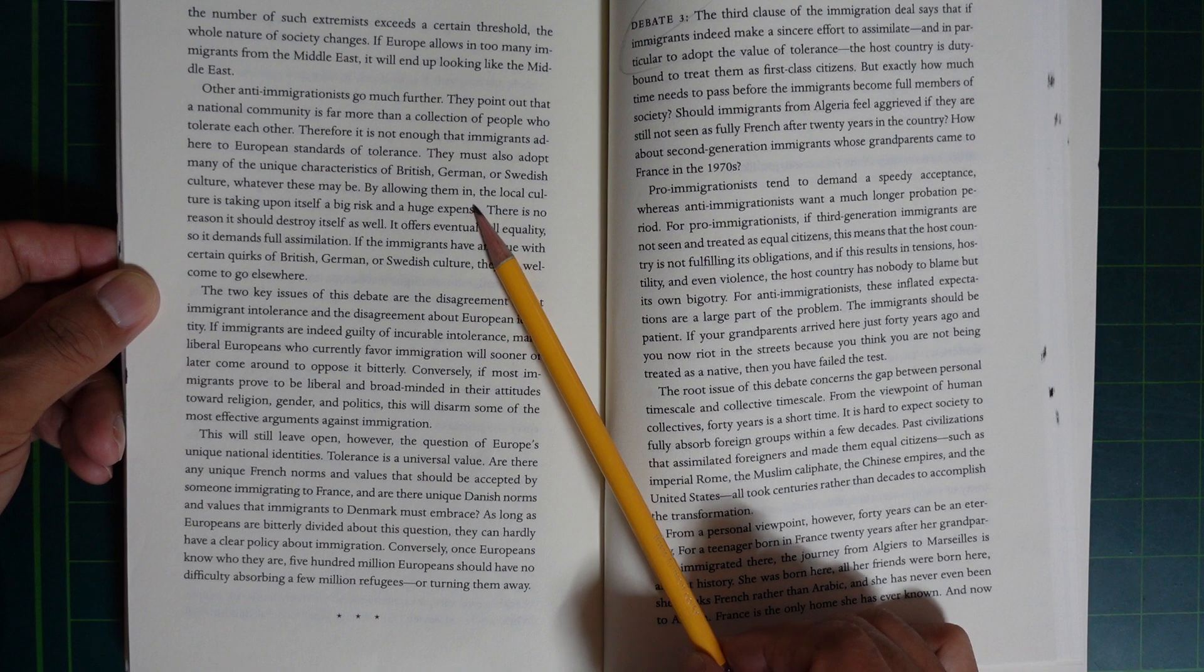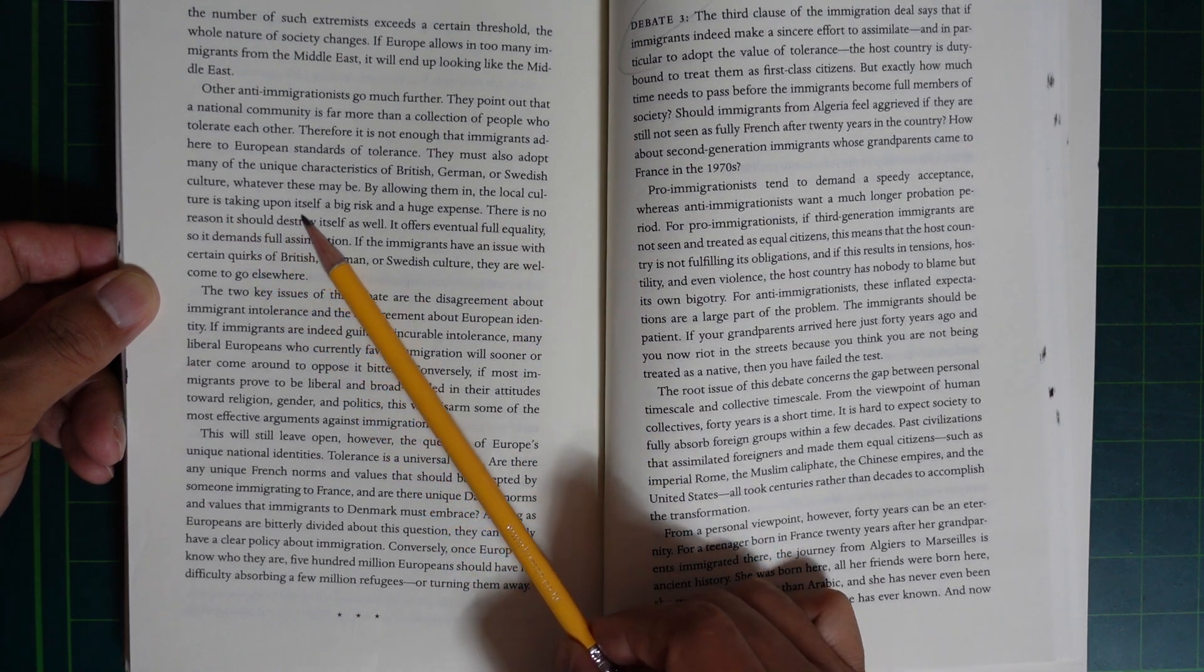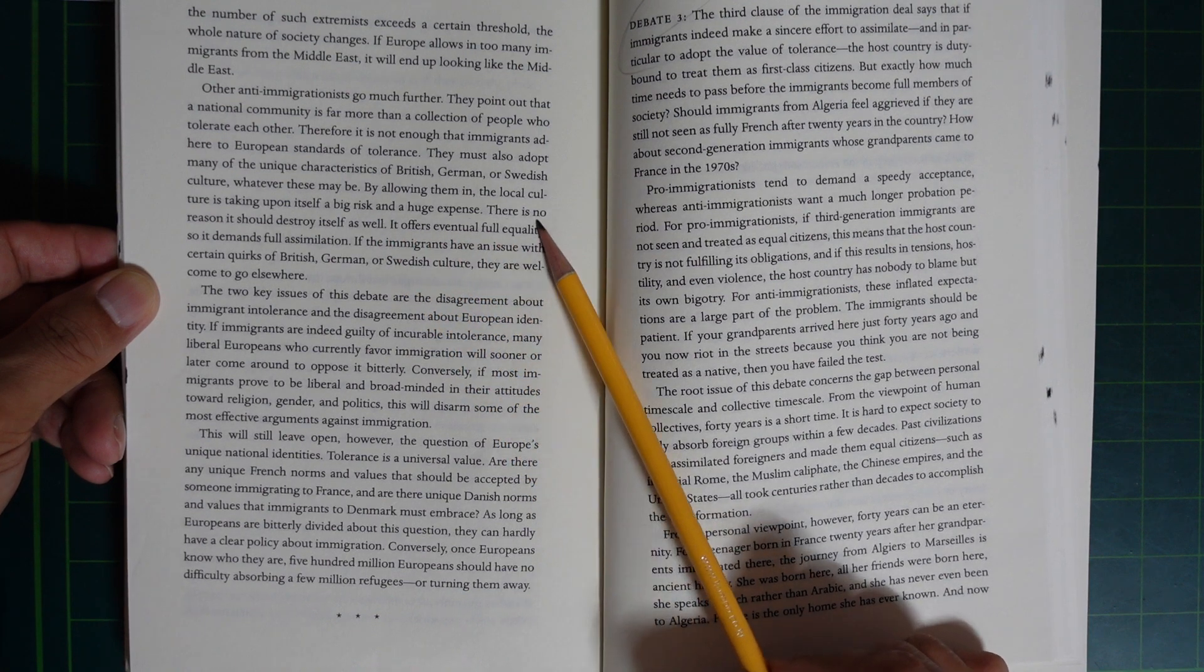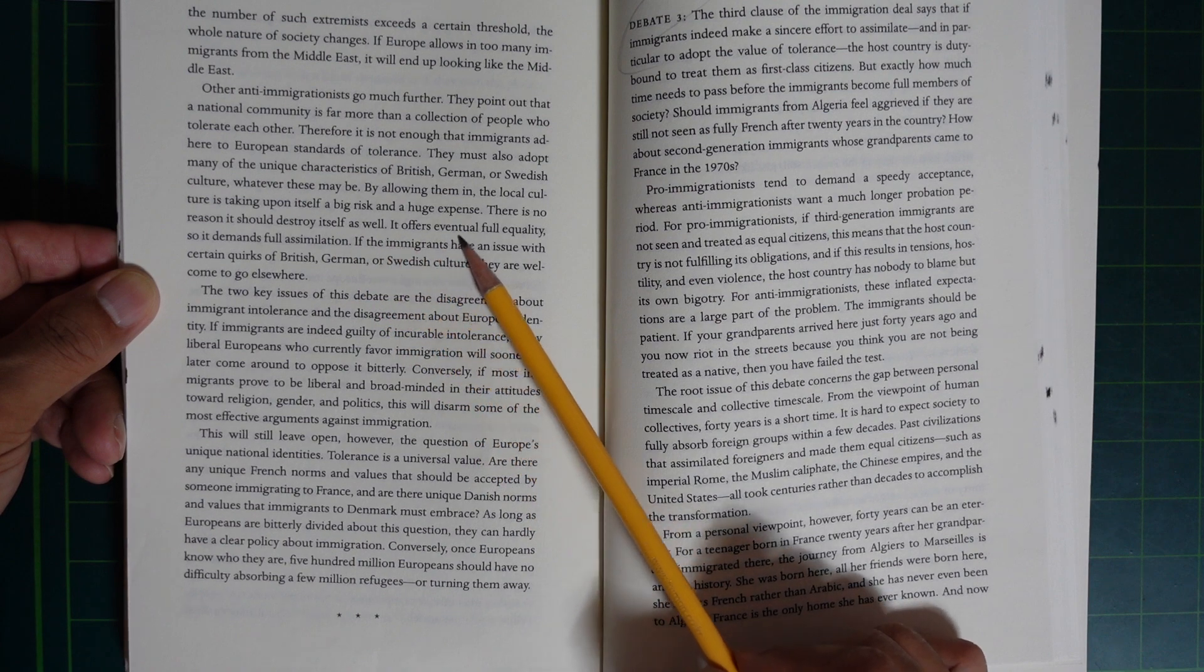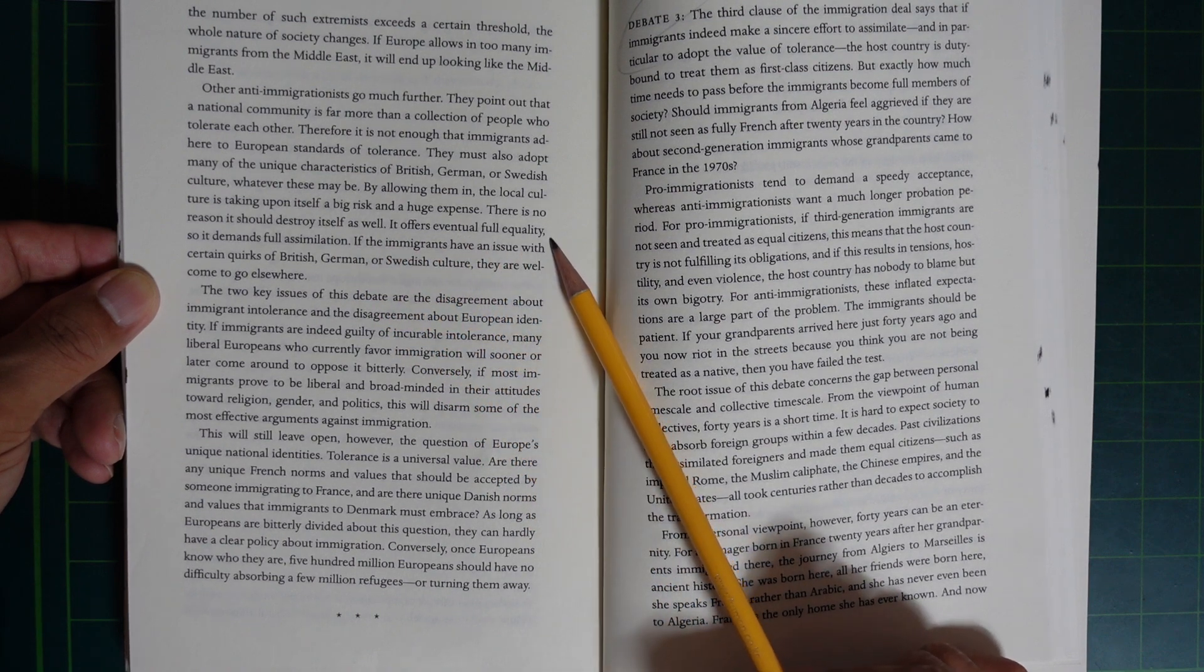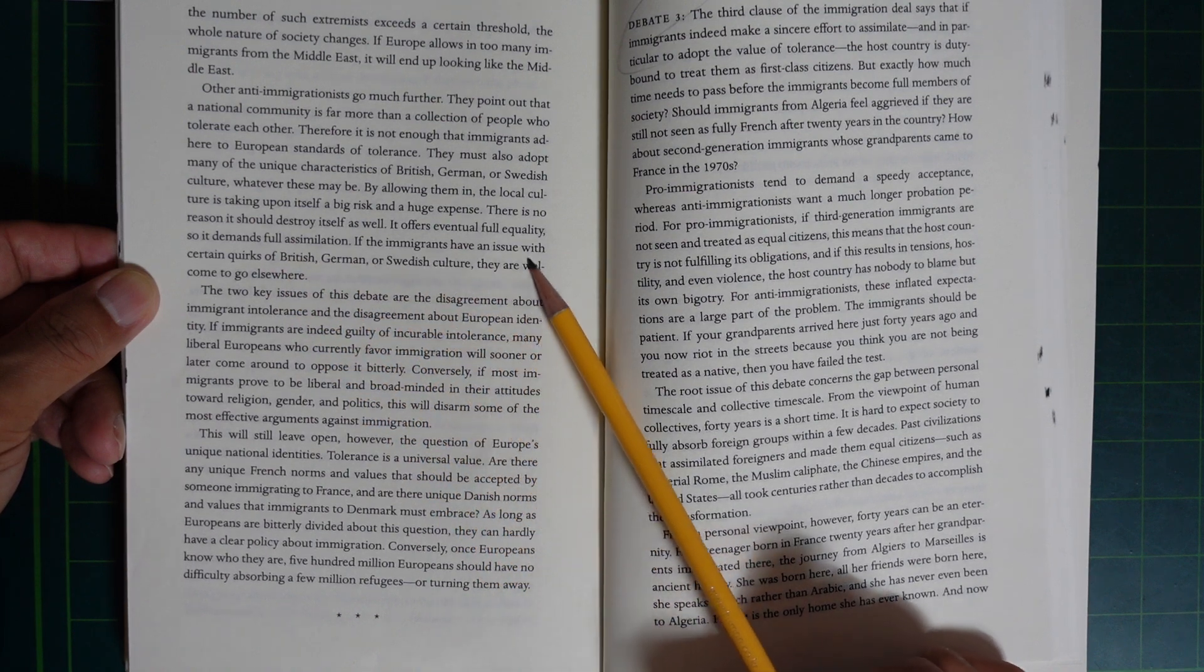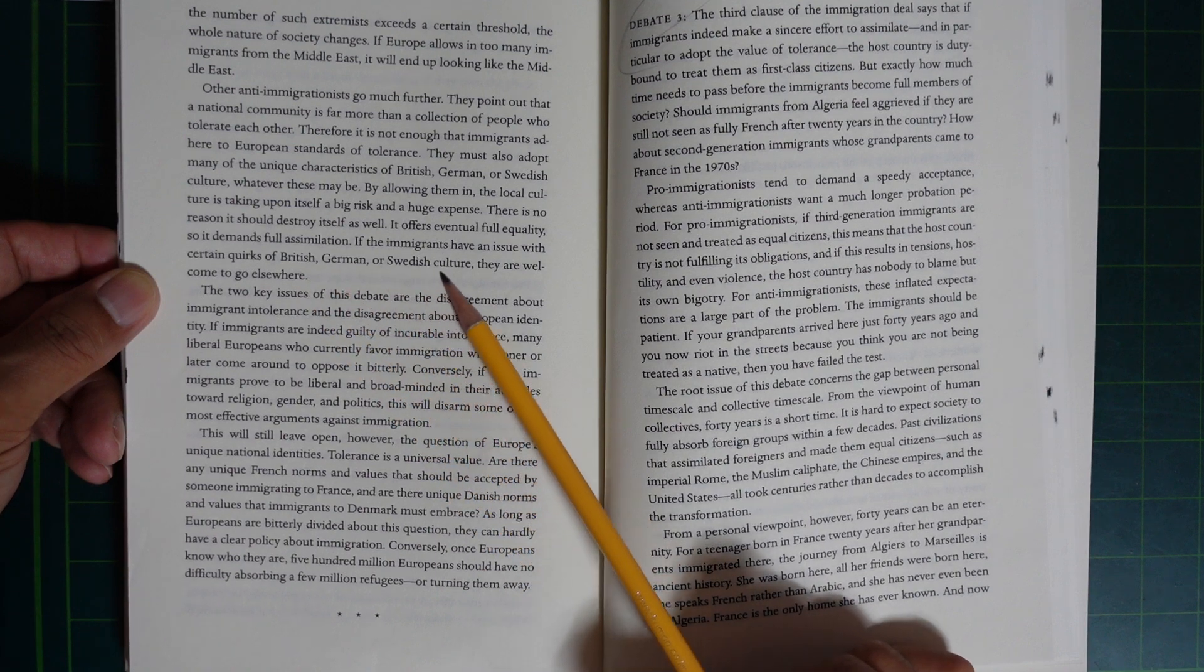By allowing them in, the local culture is taking upon itself a big risk and a huge expense. There is no reason it should destroy itself as well. It offers eventual full equality, so it demands full assimilation. If the immigrants have an issue with certain quirks of British, German, and Swedish culture, they are welcome to go elsewhere.